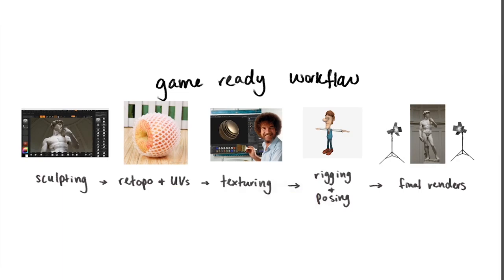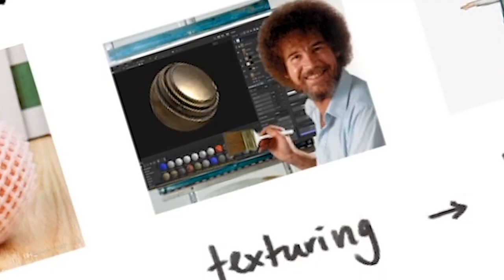Before we get started talking about the actual model itself, I wanted to talk a little bit about the different types of workflows that I use to create models. The first workflow is what I would call a game-ready workflow, where you're creating a character for a game and it's going to be rigged and animated. You start in ZBrush with sculpting, make it nice, and once your high poly mesh is done, you retopologize so that it becomes a low poly mesh, and then you UV it. At that stage you move over to texturing.